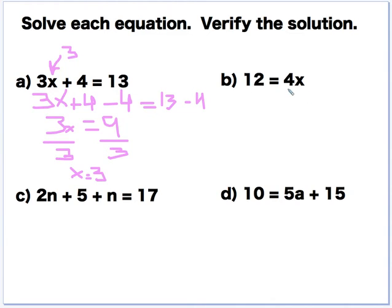12 is equal to 4x. This one's pretty straightforward. What's happening to x? It's being multiplied by 4. And the opposite, divide by 4. So our x equals 3. I plug that x equals 3 back into here. And I say, does 4 times 3 equal 12? It does.